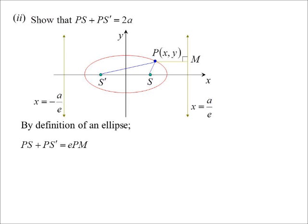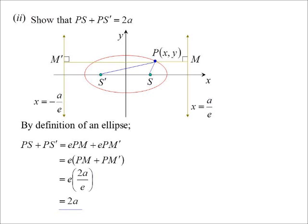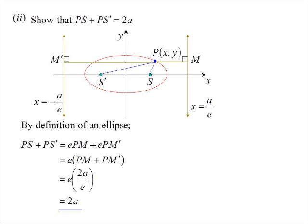We can use our definition of an ellipse. PS plus PS dash will equal the eccentricity times PM, remember, distance to the focus is equal to eccentricity times the distance to the directrix, plus, to the other directrix, eccentricity times PM dash. I can factorise that and get PM plus PM dash, which is just a horizontal line going between the two directrices. Therefore, I know that distance is twice A over E. So, E times 2A over E, the answer is 2A. A lot quicker than using the distance formula and trying to work it out the other way. Okay, let's play with 6D.